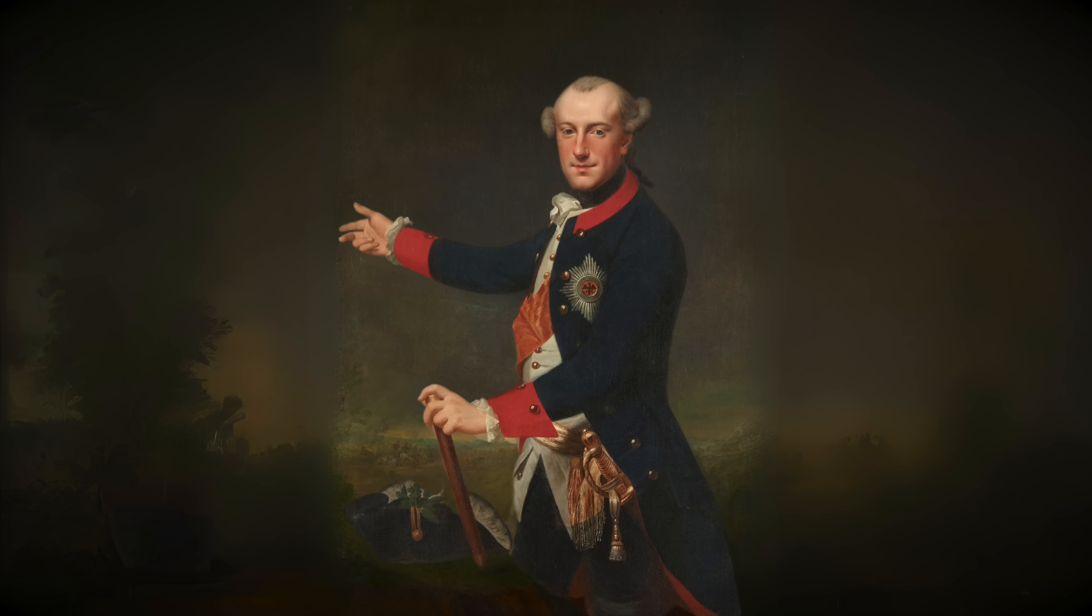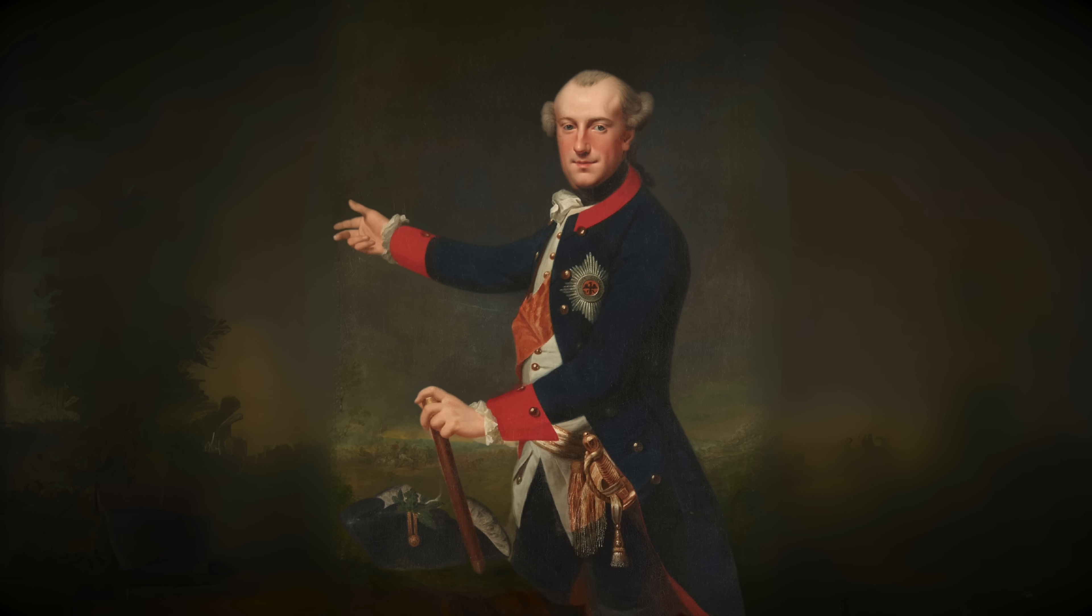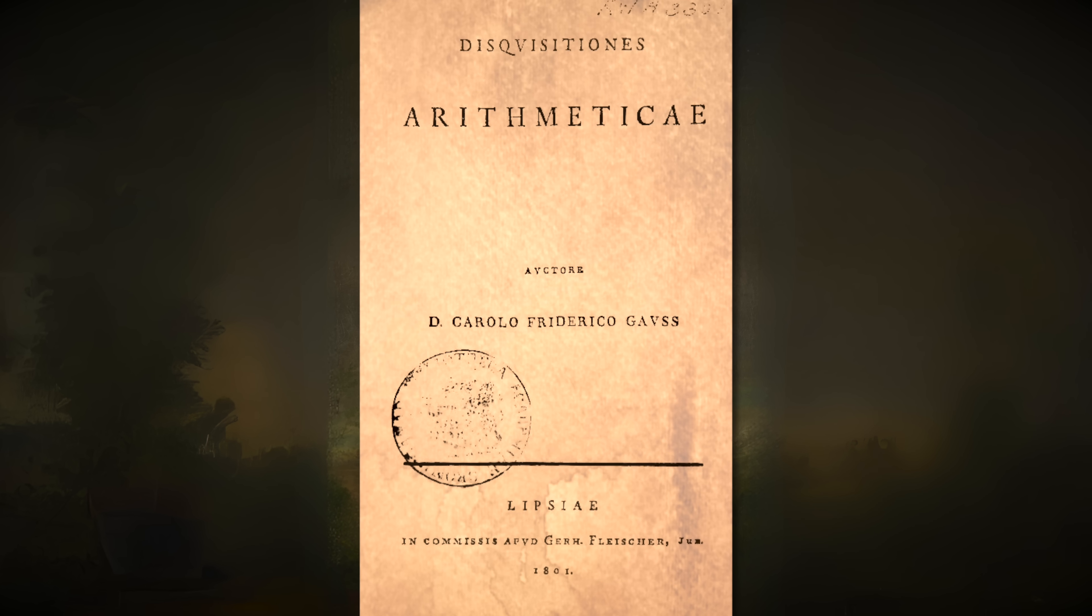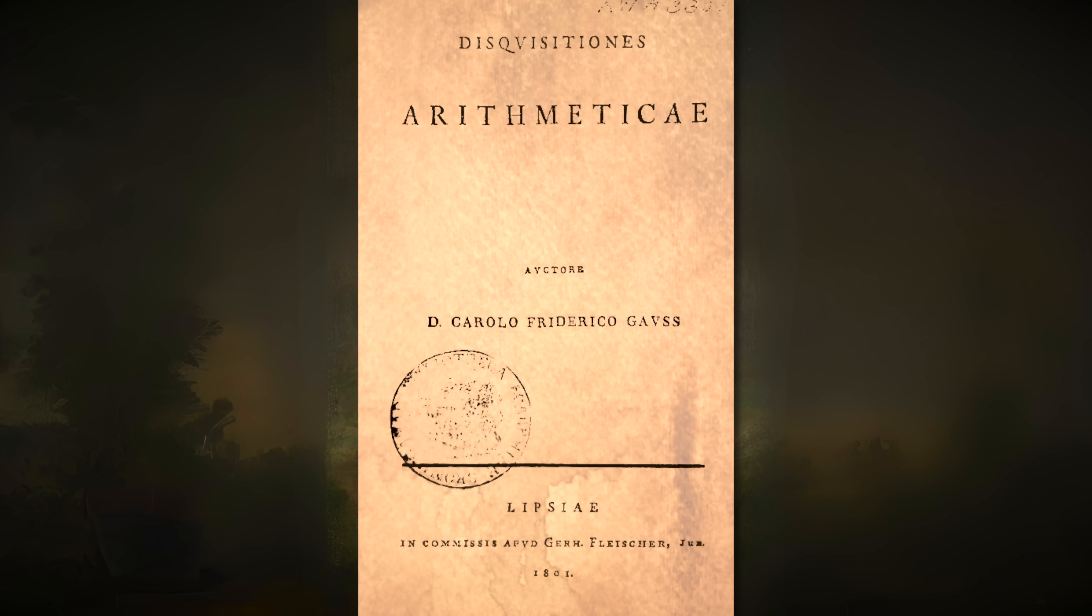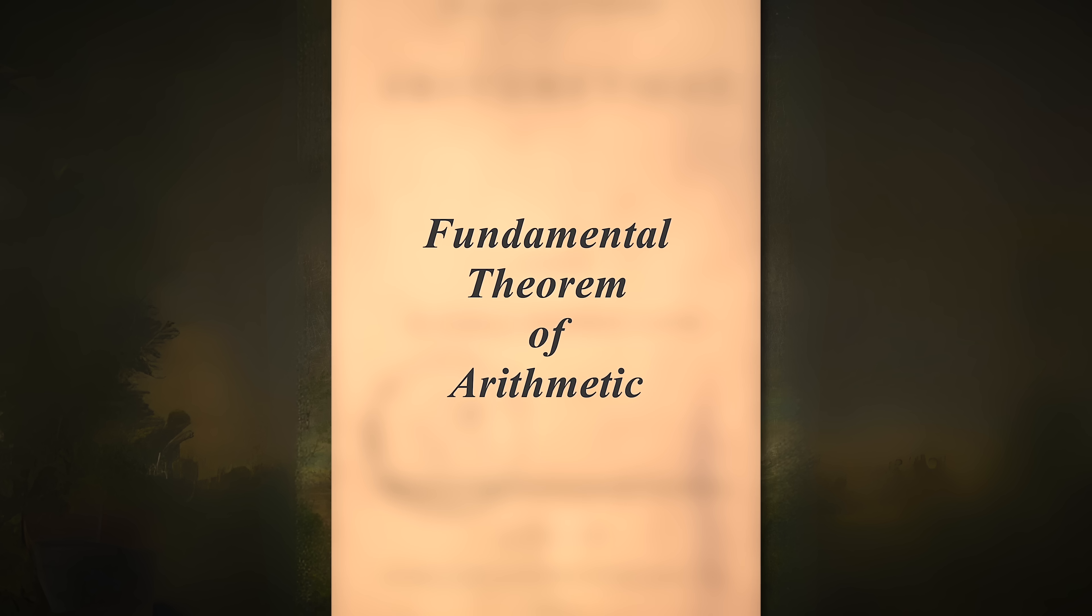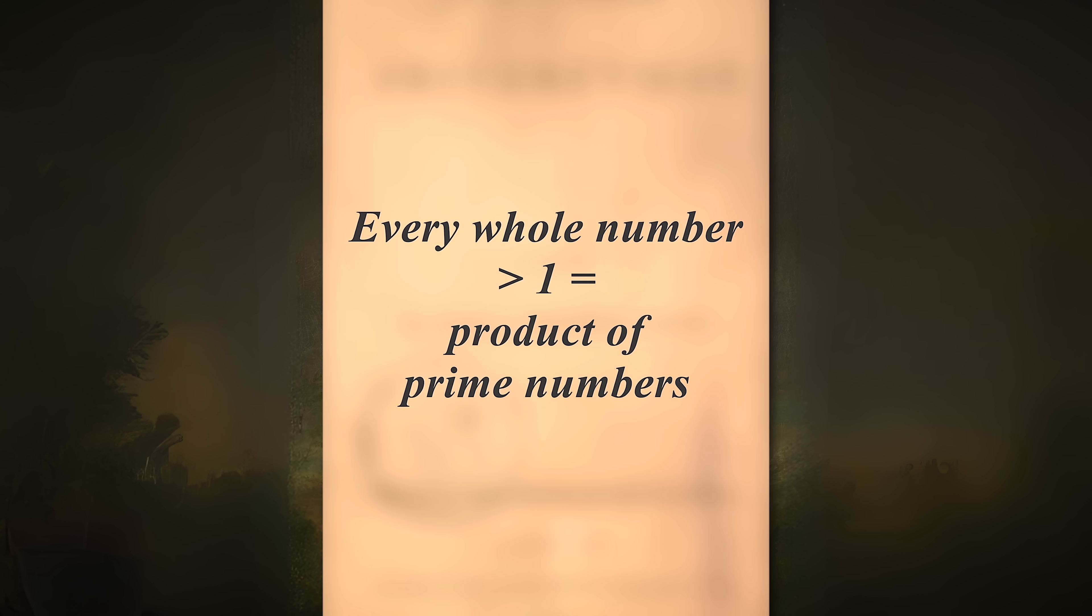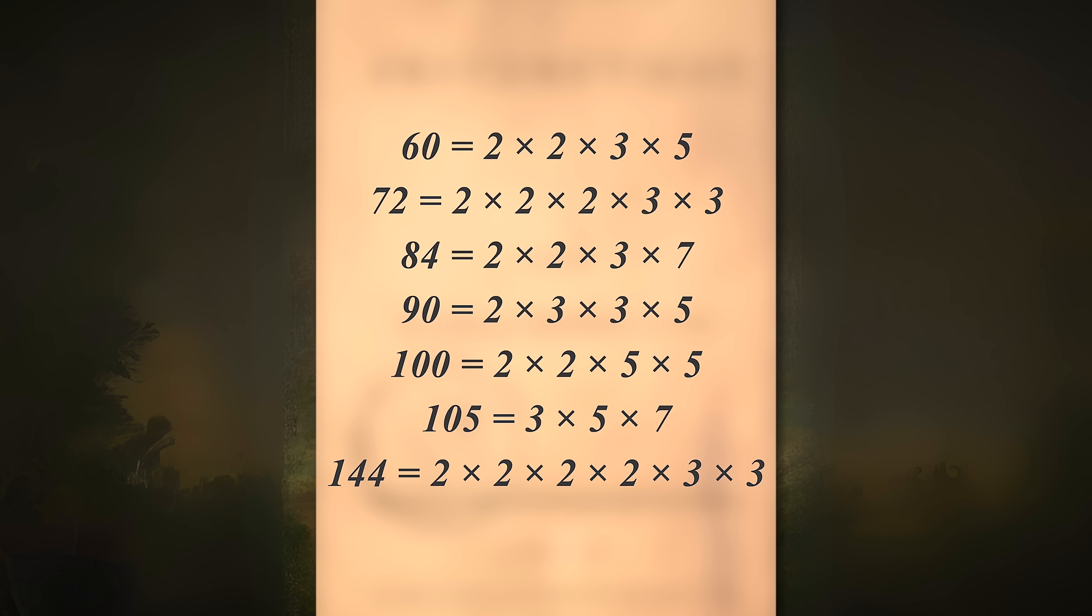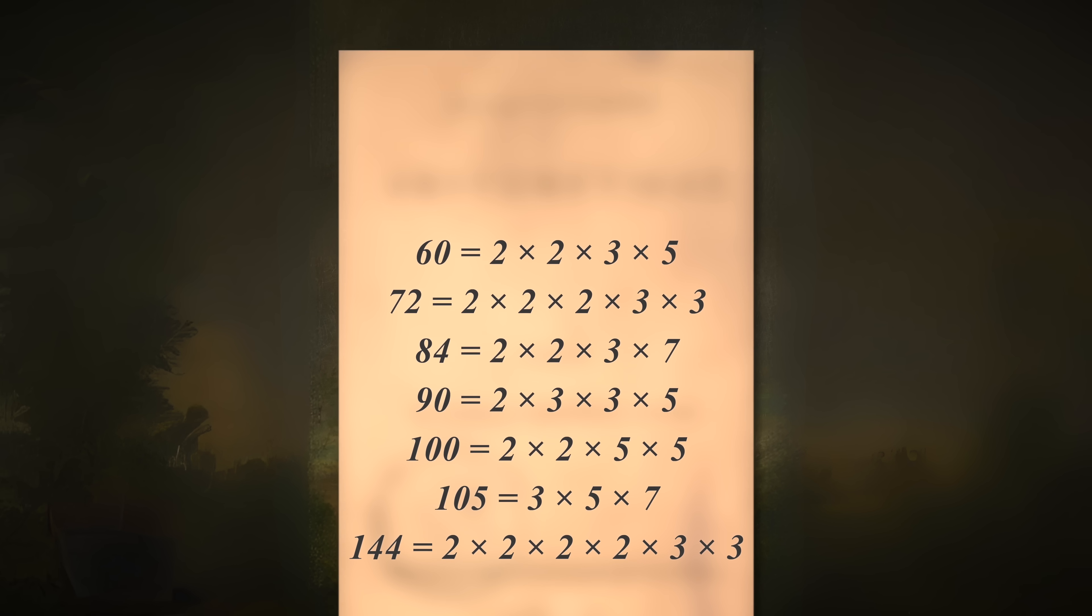The Duke, on the other hand, believed in Carl's potential and continued to support him financially. His generosity and patience paid off. Carl's efforts culminated in the publication of Arithmetical Investigations in 1801. The book included a rigorous proof of the fundamental theorem of arithmetic, which states that every whole number greater than one can be expressed uniquely as a product of prime numbers. This established prime numbers as the building blocks of all integers and reinforced their role as the basis of modern number theory. Carl dedicated his seminal work to the Duke.